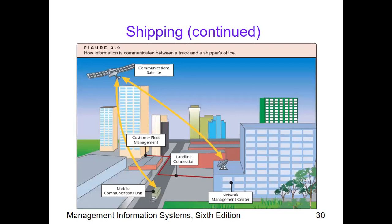This is an example of how shipping information is communicated between a truck and a shipper's office. We have our satellite and mobile communication going back and forth. We need network connections — telephone, landline — in connection with the network management center and the customer fleet management, so that customers' networks are ready when we deliver goods to them on time.